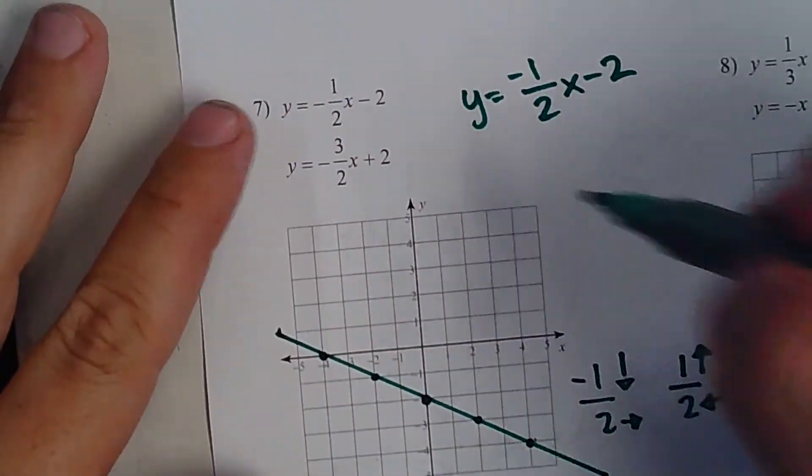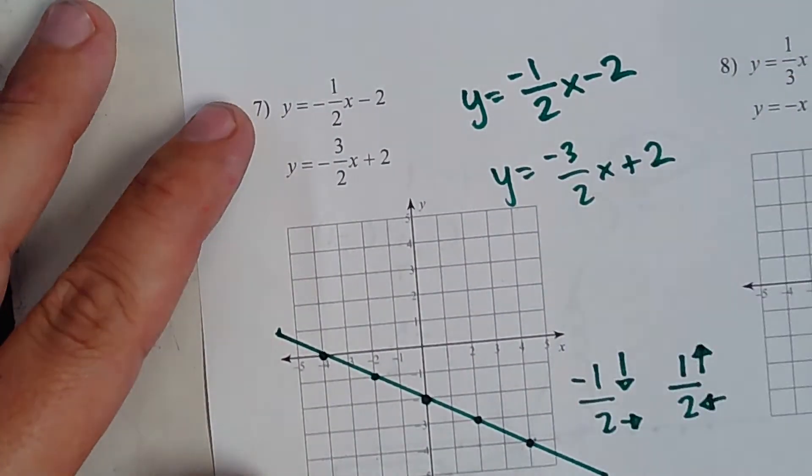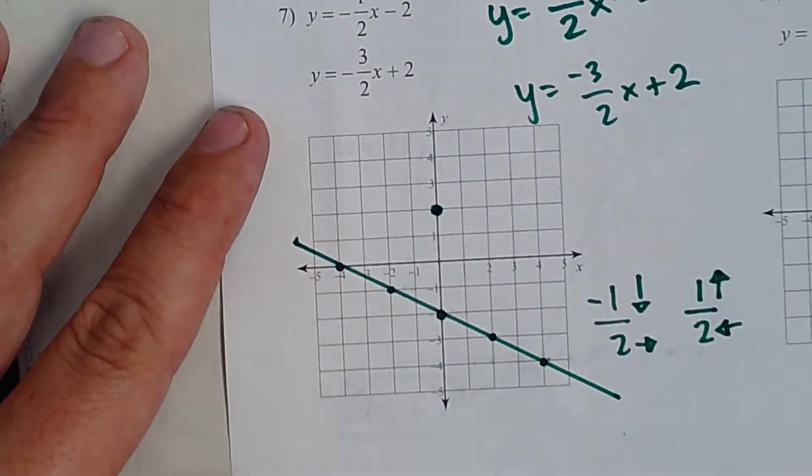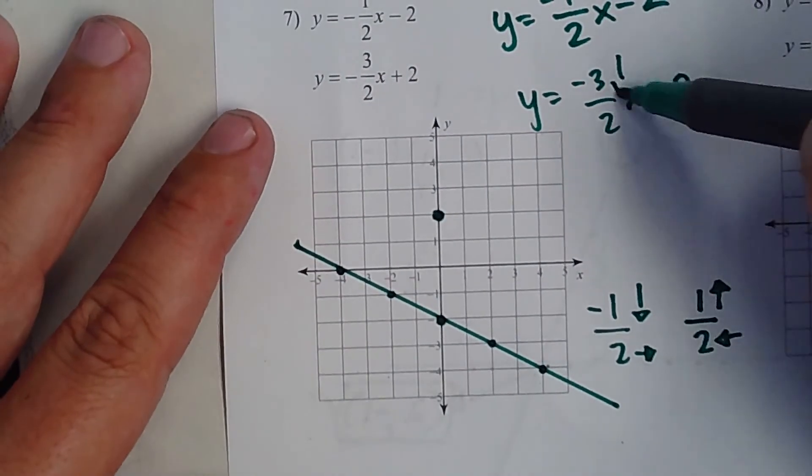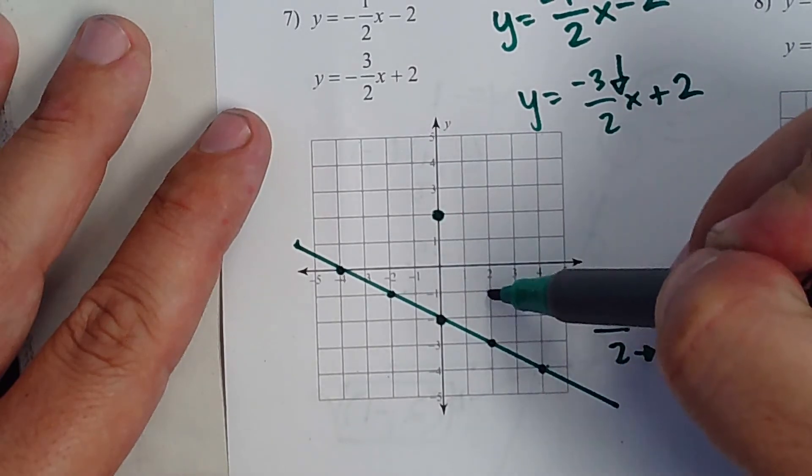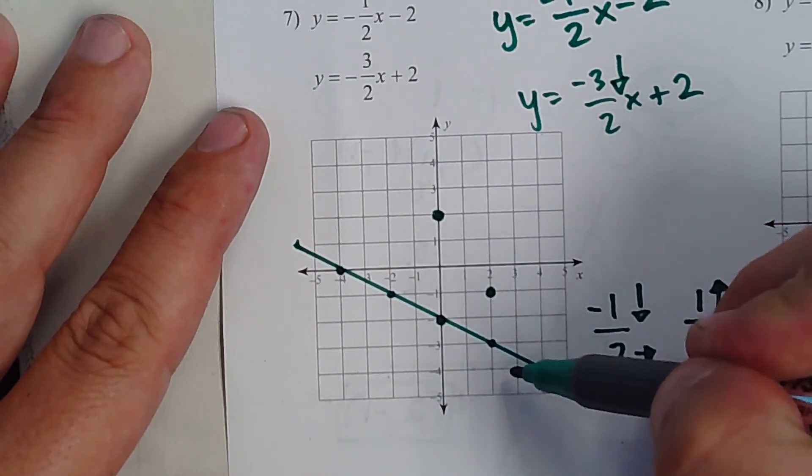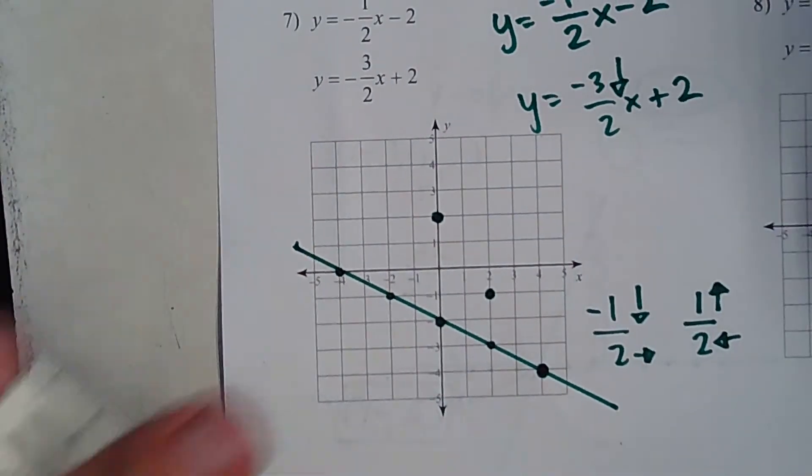Now, let's do the next one. Y equals negative 3 over 2x plus 2. Positive 2. Then, what's my slope? Going down 3 over 2. Down 1, 2, 3, over 2. All right, let's do it again. Down 1, 2, 3, over 1, over 2. And guess what? I don't need to find any more coordinates because I know where they connect.